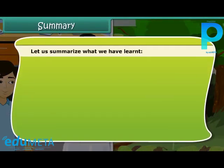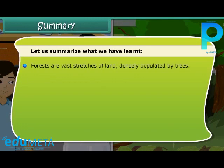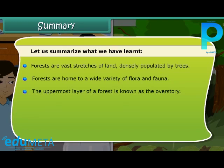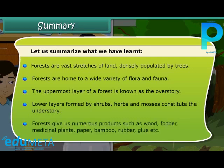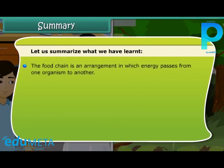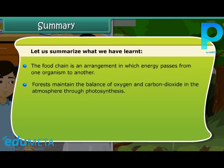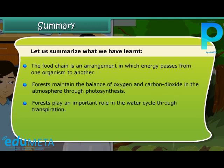Summary: Forests are vast stretches of land, densely populated by trees, and are home to a wide variety of flora and fauna. The uppermost layer of a forest is known as the overstory; lower layers formed by shrubs, herbs, and mosses constitute the understory. Forests give us numerous products such as wood, fodder, medicinal plants, paper, bamboo, rubber, and glue. The food chain is an arrangement in which energy passes from one organism to another. Forests maintain the balance of oxygen and carbon dioxide through photosynthesis, play an important role in the water cycle through transpiration, and prevent soil erosion and air and noise pollution.